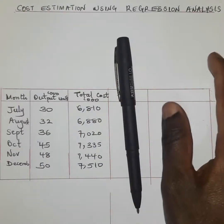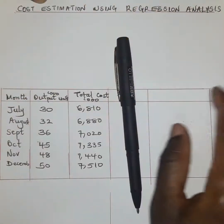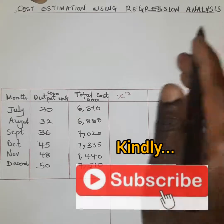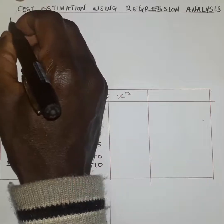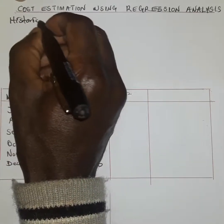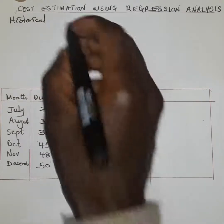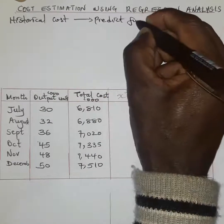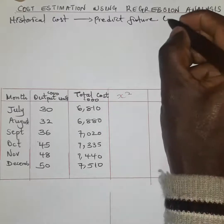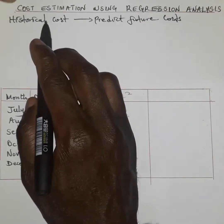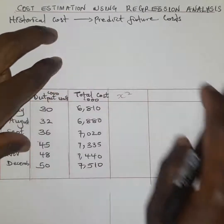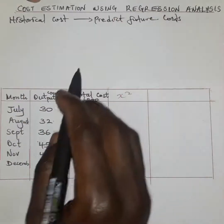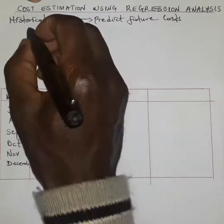When we talk about cost estimation in cost accounting or management accounting, we are referring to an approximation of cost whereby we consider the historical cost to predict the future cost. In other words, we use costs which have already been incurred in the past to approximate an amount that is likely to be incurred in future.